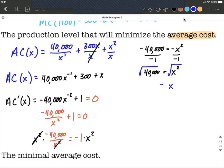Now I'm not worrying about the plus and minus because a real-life example wouldn't make sense to produce a negative number of items. The square root of 40,000 is going to give us 200 and we can call that a critical number. Critical number or critical value at 200.